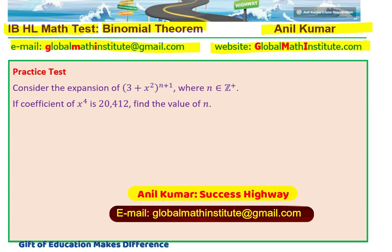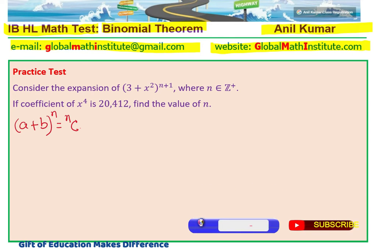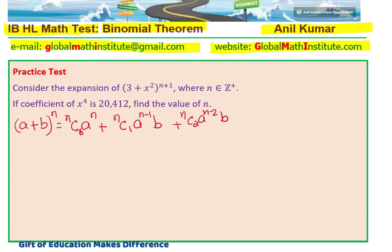Now, let us try to understand how we apply the formula of binomial expansion and solve this problem. In general, binomial expansion formula can be written as (a + b)^n equals nC0·a^n + nC1·a^(n-1)·b + nC2·a^(n-2)·b² plus so on. The powers add up to n in this case. Last term will be nCn·b^n.